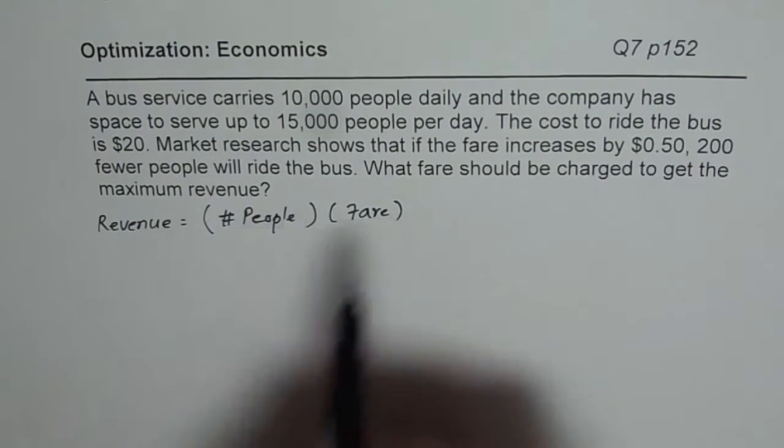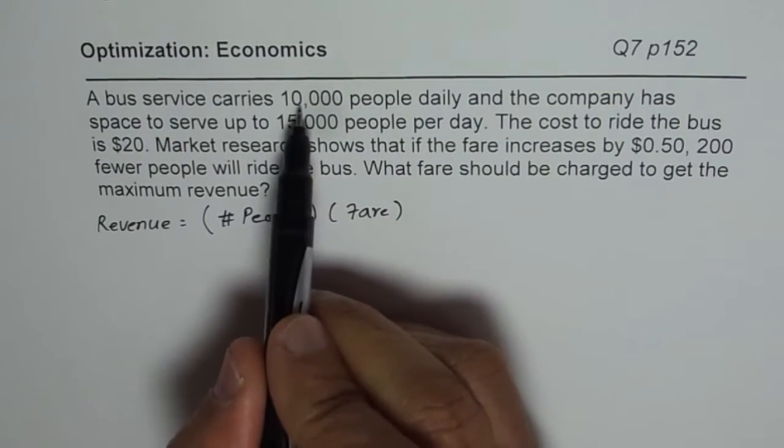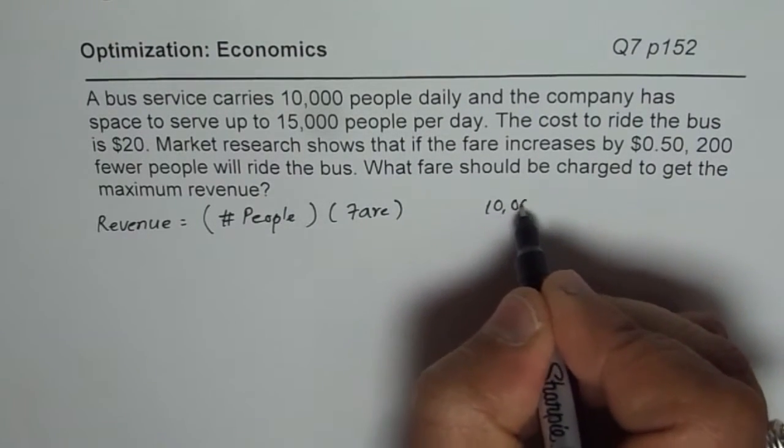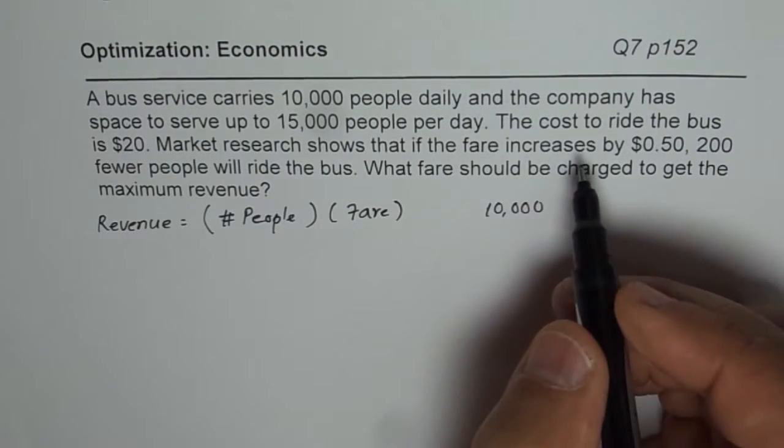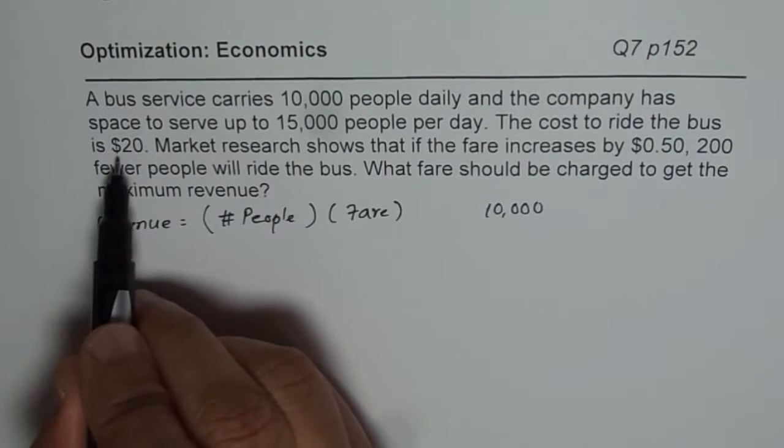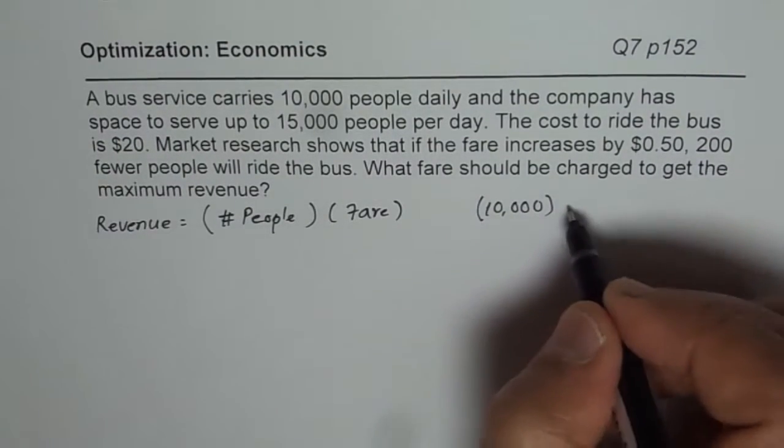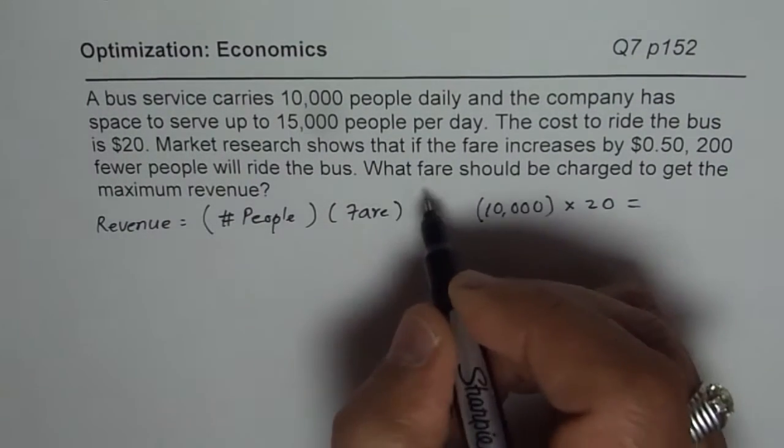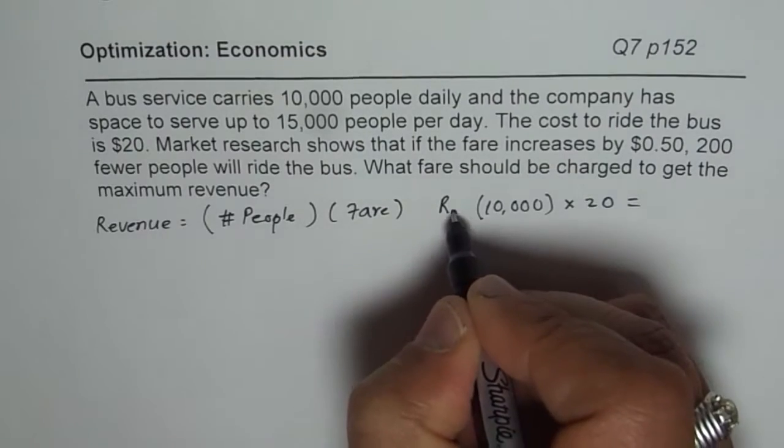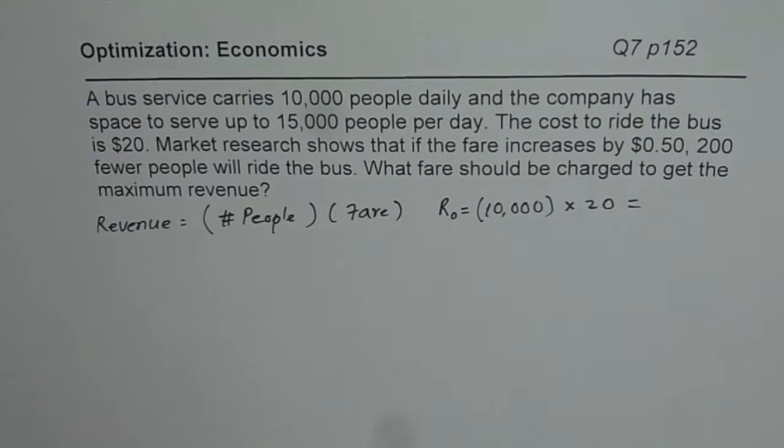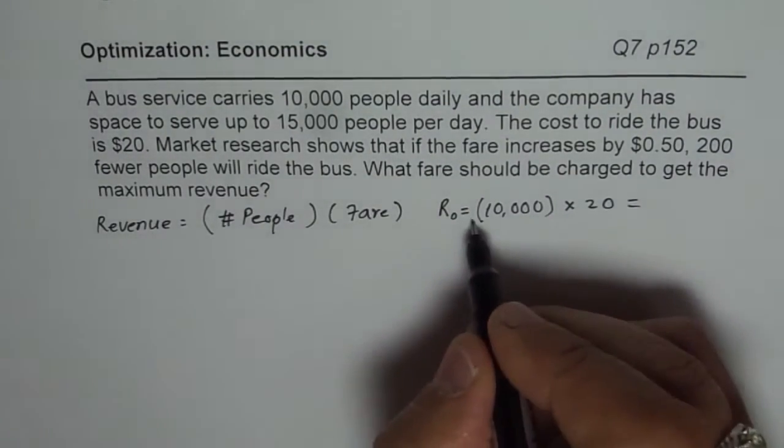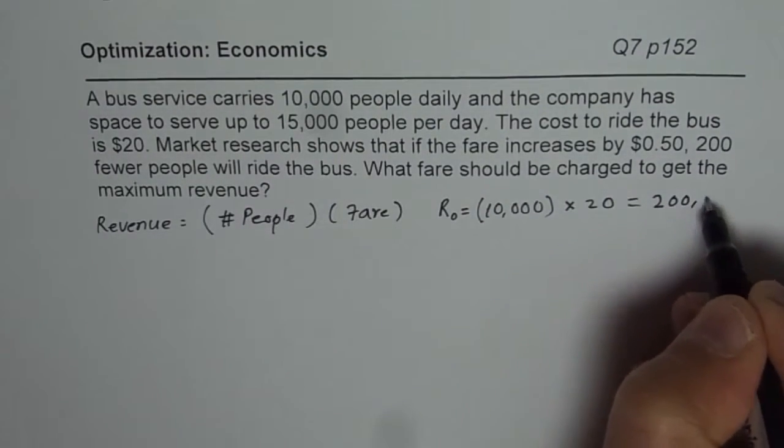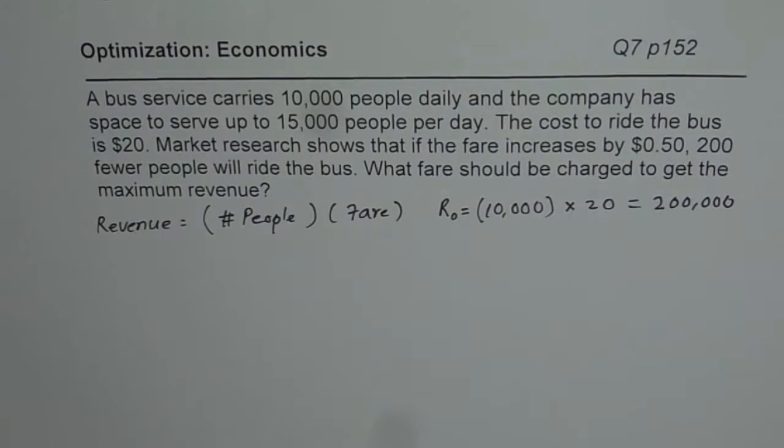Now what we are given here is under normal conditions there are 10,000 people traveling daily. So normally it is 10,000 people, that is what it is. And if the fare is $20 for them, so that is a normal cost. So that we should say is a boundary condition. So that is times 20. So that is, we can call this as our R0, as the base revenue for us. So which is 200,000. So 2 and 20 times 10 is 200. So 200,000. So that is the base revenue.